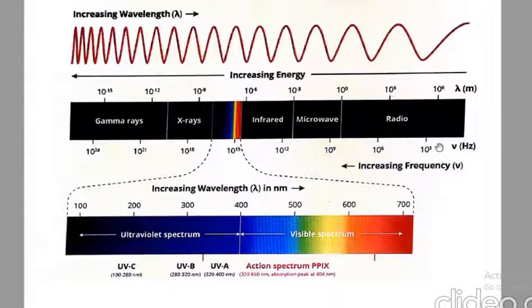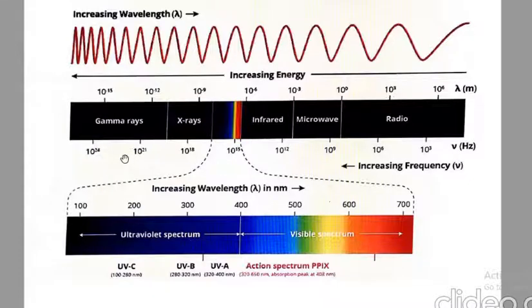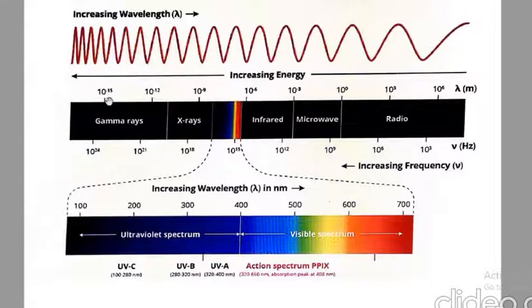Going from rightmost to leftmost part, we see increasing frequency: radio waves, microwave, infrared, visible, ultraviolet, X-ray, and finally gamma rays. We know that frequency is inversely proportional to wavelength. As frequency increases, wavelength decreases — from 10^6 down to 10^-15 meters.